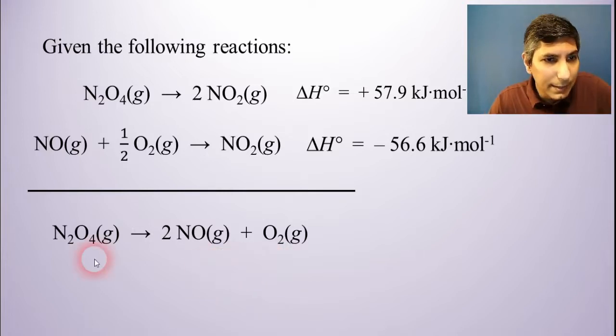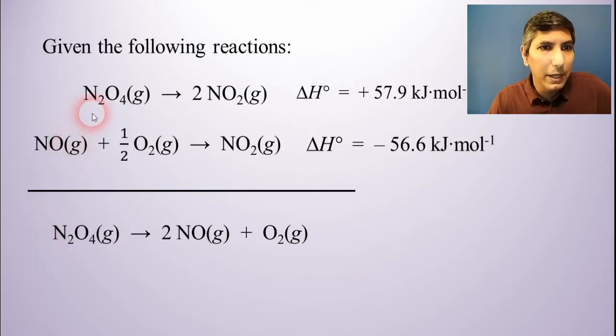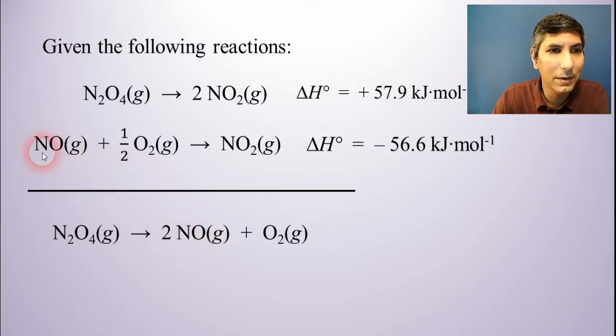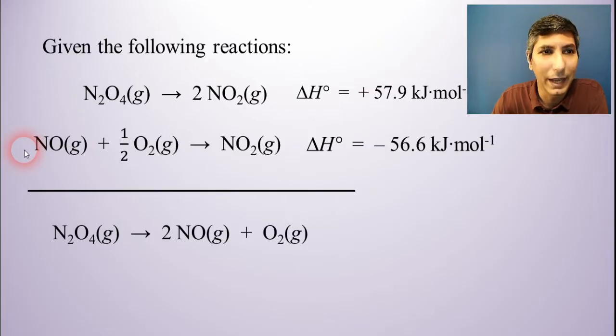So once again, all we have to do is somehow manipulate these two reactions up top here so that they add up to give us the overall balanced equation at the end. This is kind of like solving a puzzle. One thing I notice is that in the overall equation, N2O4 needs to be on the left. It needs to have a coefficient of one. Well, the only place that N2O4 pops up in these other equations is in number one up here, and it is on the left, and it has a coefficient of one. So it looks like that equation is okay. I don't have to do anything to that.